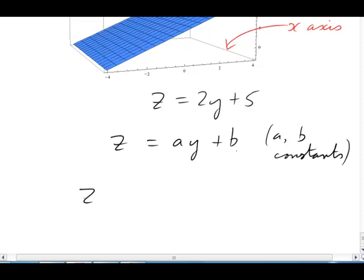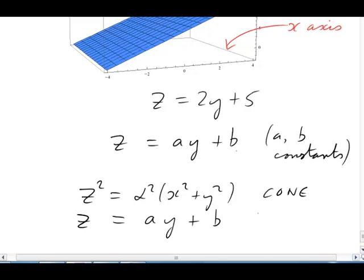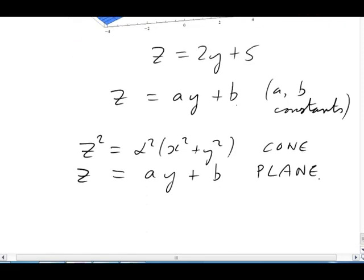z squared equals alpha squared x squared plus y squared, that's the cone, and at the same time z equals ay plus b. That is a very particular plane, but from the point of view of the cone, it's just as good as any other plane. It will tell us all we need to know about the cross sections in entire generality. I'm going to conclude part 1 here, and we'll move on and talk about the solutions of these equations in part 2.